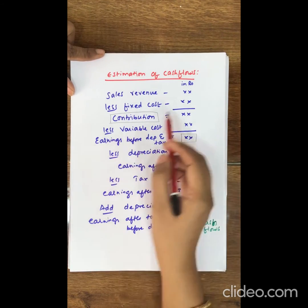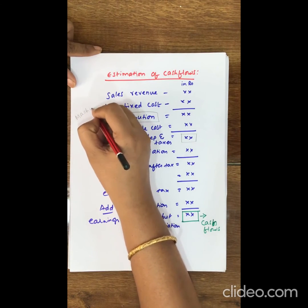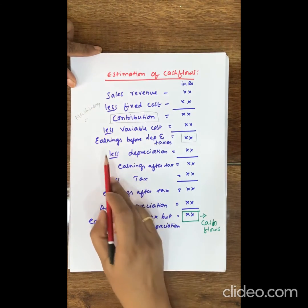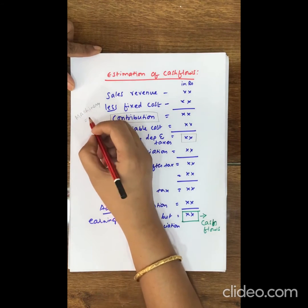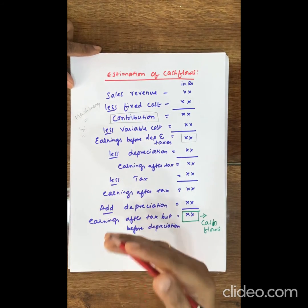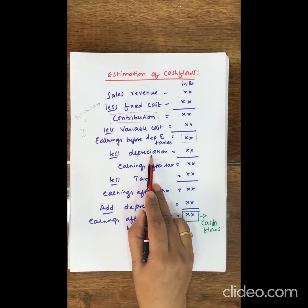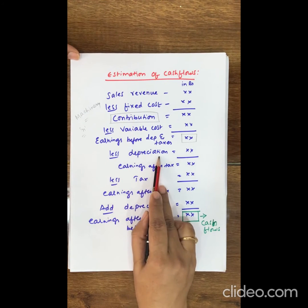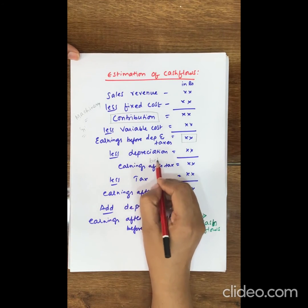As we are talking about investment proposals — say for example, fixed assets like machinery — every year we have to charge depreciation on these assets because they have a fixed life period. The value of the asset keeps deteriorating every year. That's why we calculate and charge depreciation on these assets. Therefore, less depreciation.